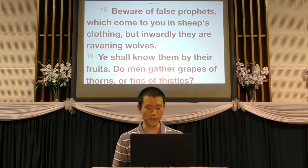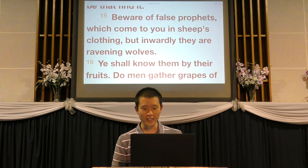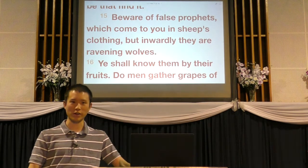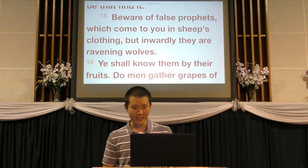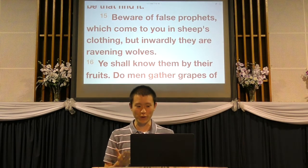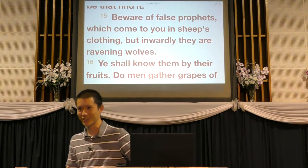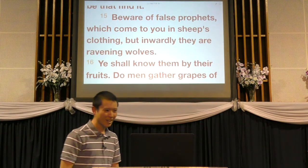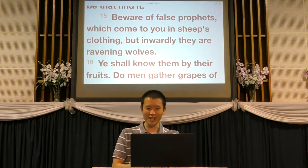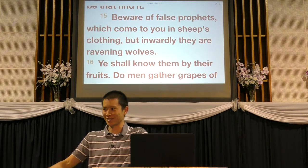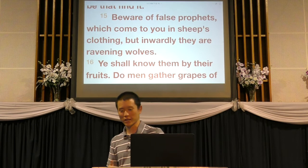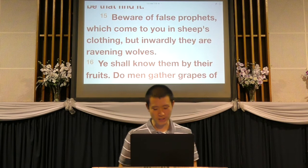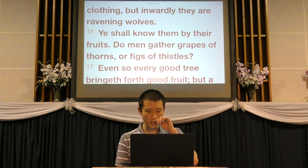Matthew 7:15 says, "Beware of false prophets which come to you in sheep's clothing, but inwardly they are ravening wolves. Ye shall know them by their fruits." Whenever you talk to people about assurance of salvation, many people quote this passage and say "the Bible says you'll know them by their fruit, so that's how you'll know you're saved." But is that even the context? Verse 15 says beware of false prophets - not every unsaved person is a false prophet, and saved people are not false prophets. So you can't just make "them" mean anything you want and say "that's Christians." The context is: how do we identify false prophets?